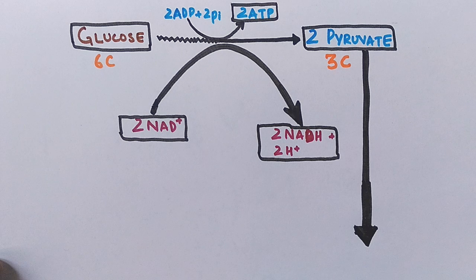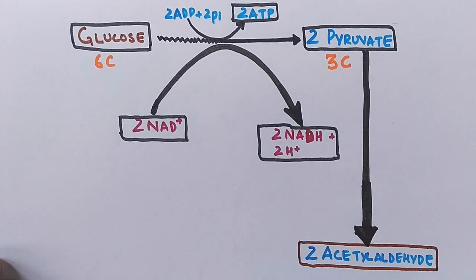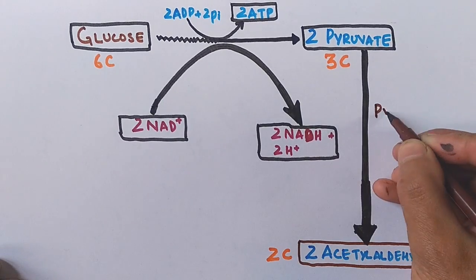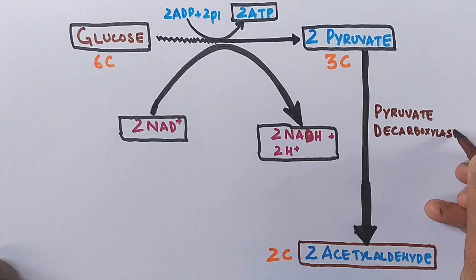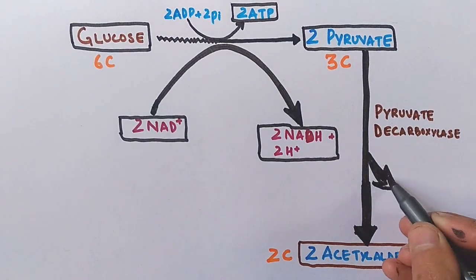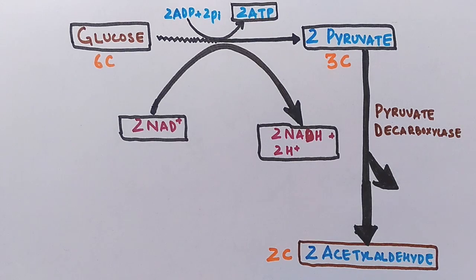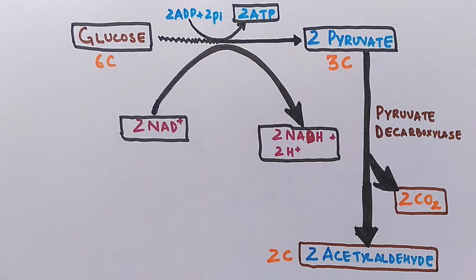Since oxygen is absent, pyruvate is acted upon by pyruvate decarboxylase and gets converted into acetaldehyde, a two-carbon compound. Two acetaldehyde molecules are formed, giving four carbons. Pyruvate decarboxylase also removes the remaining two carbons from the two pyruvate molecules in the form of carbon dioxide gas, keeping the total carbon count at six.